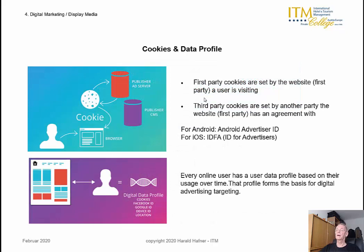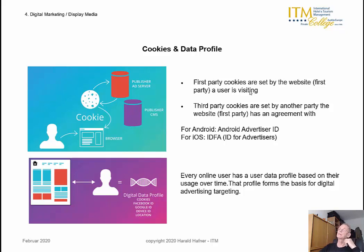Another form of data transmitted by users on the internet are so-called cookies. Cookies are stored in the user's browser. They are small text files used to connect user behavior within and across sessions, usually by assigning a user ID. We can distinguish between first-party cookies, which are set by the website the user is visiting. Whenever you access a website, you are asked whether cookies should be enabled. If cookies are not enabled, the website might not function the way you want.